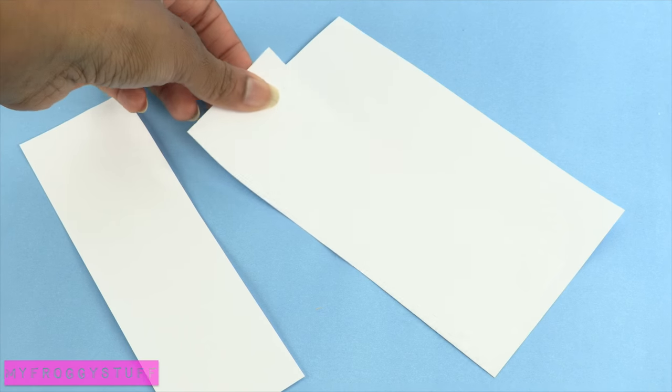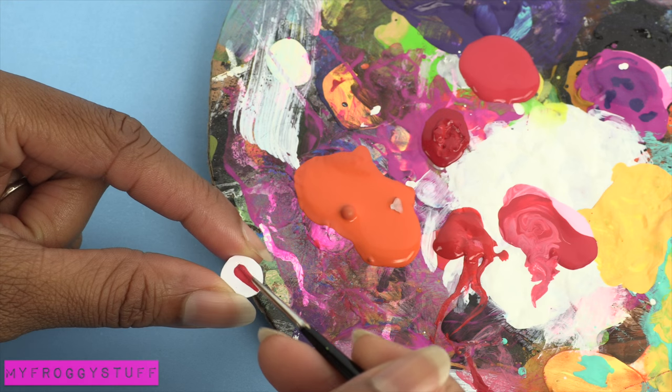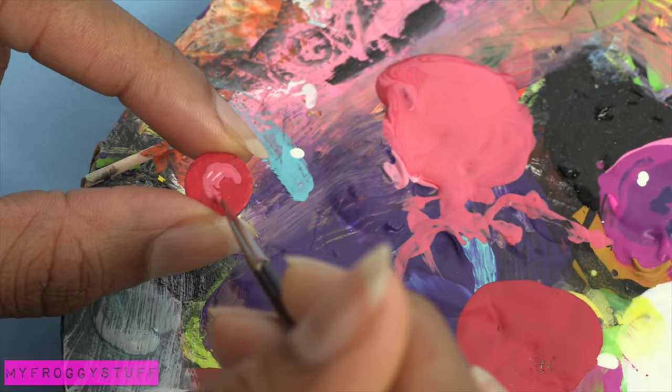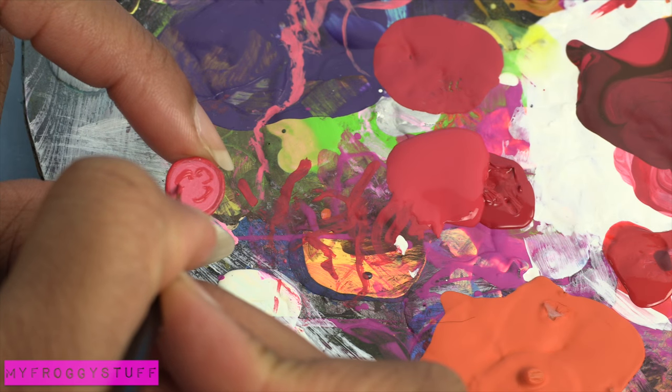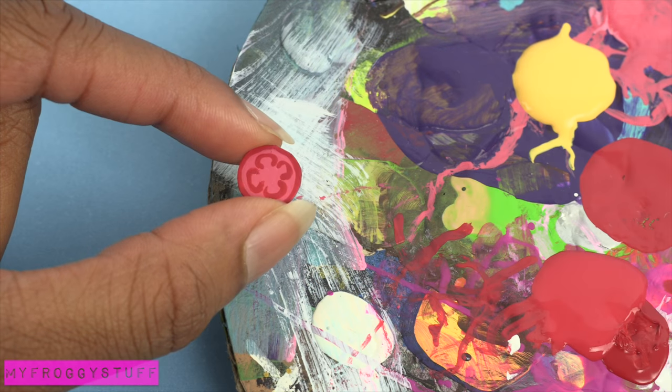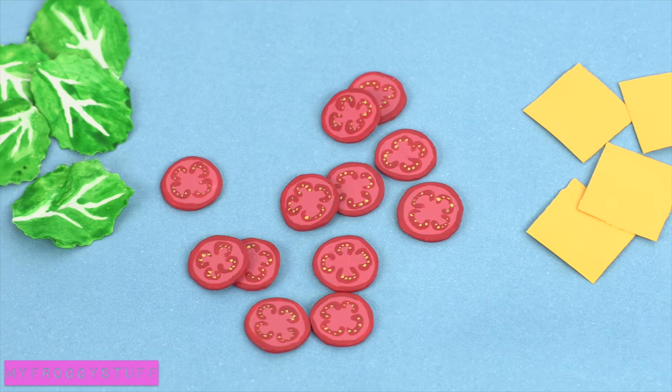Stack and glue together a few layers of paper, then cut small circles. Paint it red and paint a lighter circle on the inside. Paint four letter C's around the inside in red and add tiny yellow dots to make sliced tomato.